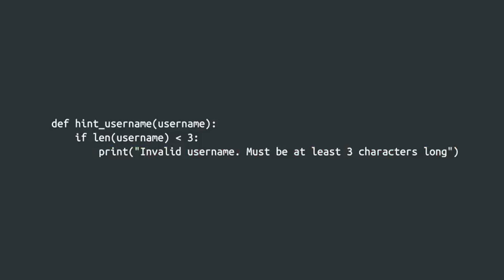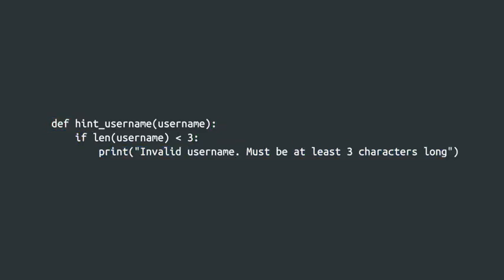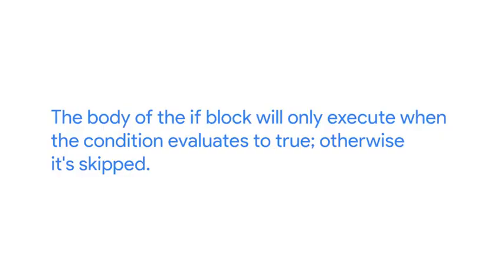You may notice that there are some similarities between how an if block and a function are defined. The keyword — either def or if — indicates the start of a special block. At the end of the first line, we use a colon, and then the body of the function or the if block is indented to the right. But there's also an important difference: the body of the if block will only execute when the condition evaluates to true. Otherwise, it's skipped.